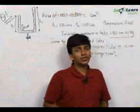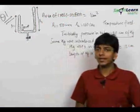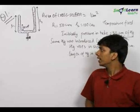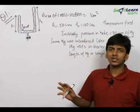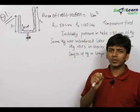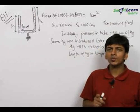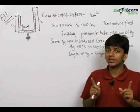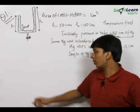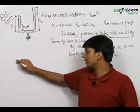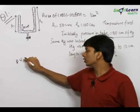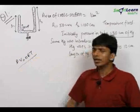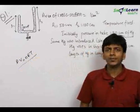The next chapter we deal with in physics is kinetic theory of gases and gas laws. This is a pretty simple chapter — you just need to remember certain basics. Remember all the assumptions of kinetic theory of gases, a simple formula PV = NRT, and you can solve almost all the questions using this formula.